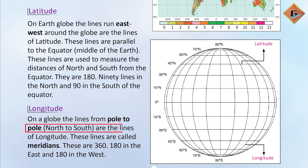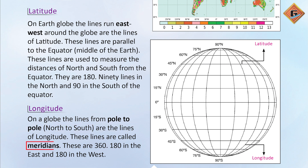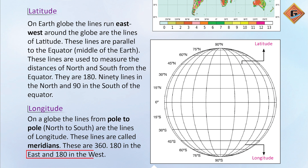Longitude: the lines that run from the North Pole to the South Pole are the lines of longitude. These lines are called meridians. There are 360 meridians in total — 180 in the east and 180 in the west.